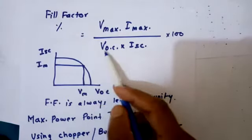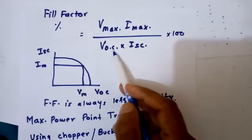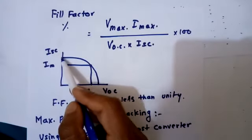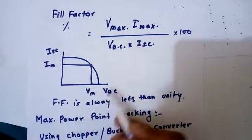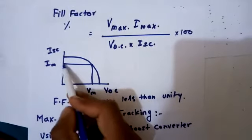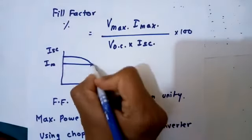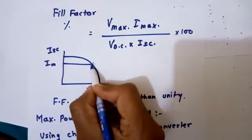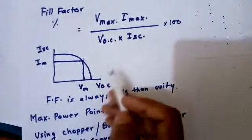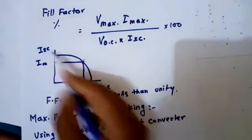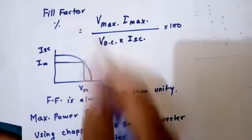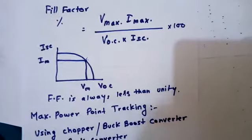Here we see the maximum VOC and ISC. In this diagram showing the current versus voltage characteristic, if we take the fill factor of this type of panel, this is the maximum power point. According to this, we can get the maximum current and maximum voltage. When we put the values of VOC, ISC, V maximum, and I maximum, we will get the fill factor in percentage. Fill factor is always less than unity.